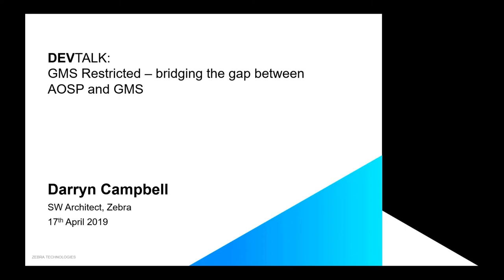We have historically had a number of customers who shied away from the full GMS package, so they had what we called an AOSP or non-GMS SKU — a separate version of the device firmware that did not have any GMS bundled features. With our latest portfolio of devices, we're now moving to an all-GMS portfolio. But to address the concerns of those customers who previously had non-GMS devices, we've introduced GMS Restricted, which bridges the gap between the two.